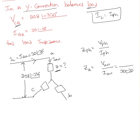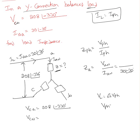He gave us VCA. So VCA equal to 208 at an angle of minus 330. Based on this, can I find VCN? I got the line value, so I'm finding the phase value. V line equals square root 3 times V phase. Since I want the phase value, VPH equals VL over square root 3. So VCN must be 208 over square root 3 at an angle of minus 330.